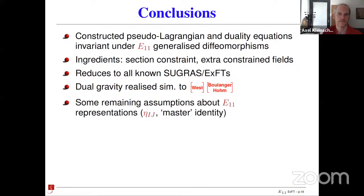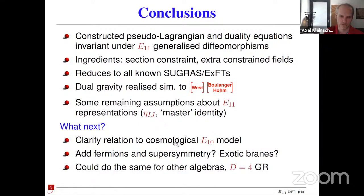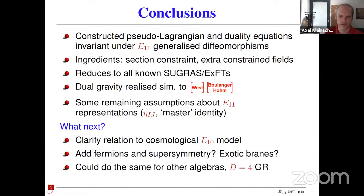To summarize: we constructed this E_{11} exceptional field theory with all the right symmetries. There are certain ingredients beyond what has been considered in other papers, but it is very much in the spirit of exceptional field theory. We have shown it reduces to 11-dimensional supergravity and helps understand the dualization of gravity better. There are some technical assumptions with only partial proof. I listed here a few things one could imagine doing next with this framework. Thank you very much.